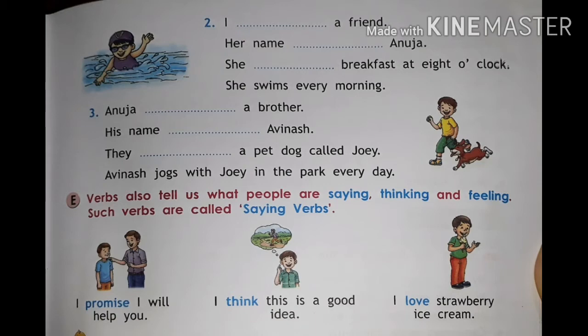Now we look at section E. Verbs also tell us what people are saying, thinking, and feeling. Such verbs are called saying verbs. So saying verbs are those verbs which express something to say. There is also thinking and there is feeling.